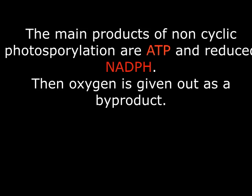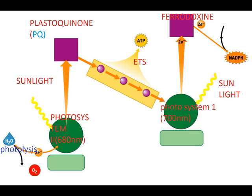Looking at the notes on your screen, you'll discover that the chain itself has two photosystems: Photosystem 1 at 700 nanometers — that is the wavelength of light it can absorb — and Photosystem 2 at 680 nanometers. At 700 nanometers, that is a longer wavelength with lesser energy. At 680 nanometers, that is a shorter wavelength with bigger energy, as represented on the energy scale diagram.